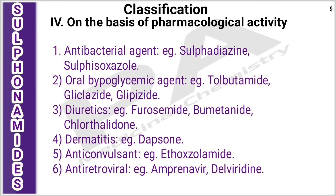On the basis of pharmacological activity, sulfonamides are classified as: antibacterial agents (examples: sulfadiazine and sulfisoxazole); oral hypoglycemic agents (examples: tolbutamide, gliclazide, and glipizide); diuretics (examples: furosemide, bumetanide, chlorthalidone); treatment of dermatitis (example: dapsone); anticonvulsants (example: ethoxzolamide); and antiretroviral agents (examples: amprenavir, delavirdine).